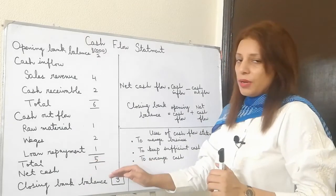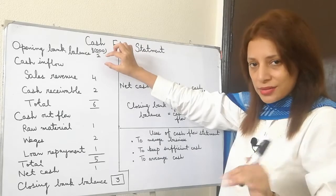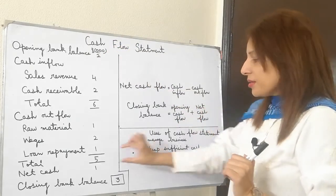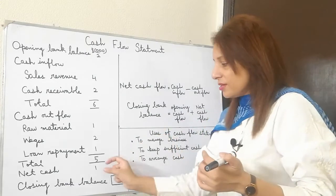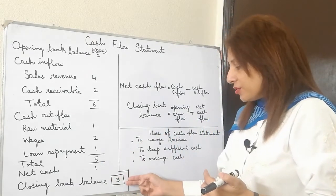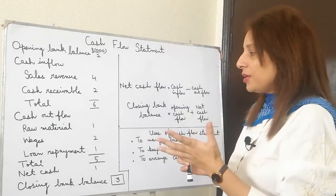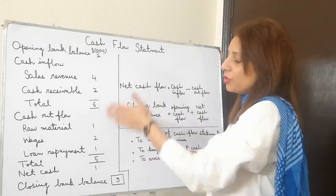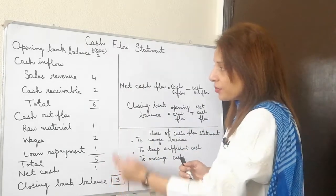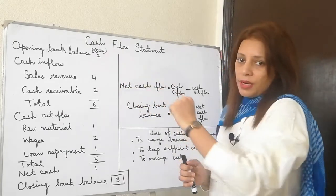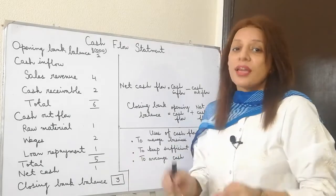Then I have closing bank balance. How we calculate that? Opening bank balance, the money we had at the start of the month, plus net cash flow which we have gained after paying all the expenses, that money will add up. This gives me the total of three. Now it can also happen that sometimes we have more outflows than inflows and your net cash will be negative. You will subtract that from the opening bank balance, and it's possible you have closing bank balance in negative.